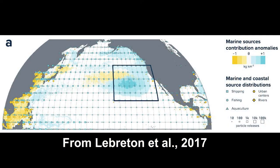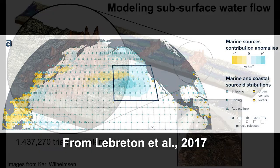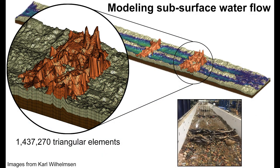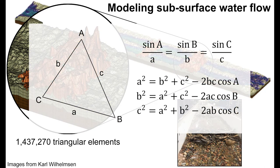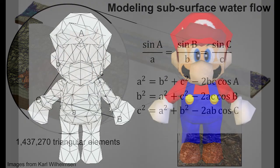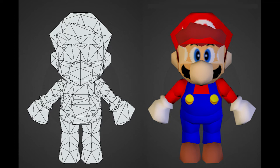Oceanographers use computer models to study and track levels of plastic pollution and where they come from. Some models use grids made of triangles to recreate surfaces. When grids are made of triangles instead of rectangles, they can accurately recreate surfaces. The special trigonometric relationships of triangles make triangular grids more computationally efficient, requiring less memory and thus faster runtimes for computer programs. Because of this, triangular grids are also used to create graphics in many 3D video games.